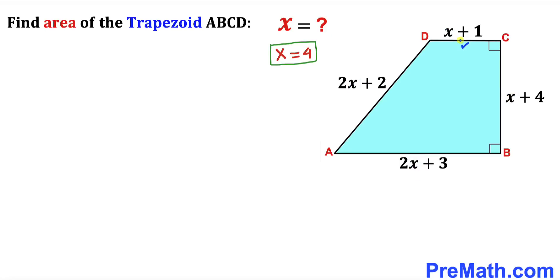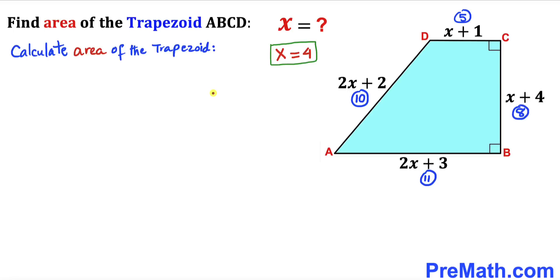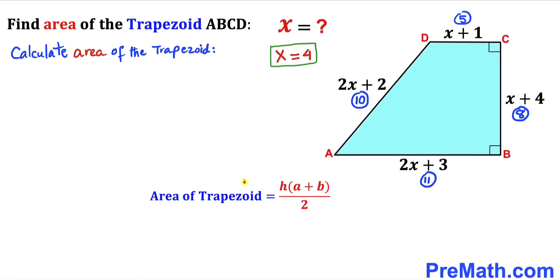Substituting x equals 4 into each side length: x plus 1 gives 4 plus 1 equals 5; 2x plus 2 gives 8 plus 2 equals 10; 2x plus 3 gives 8 plus 3 equals 11; and x plus 4 gives 4 plus 4 equals 8 units. Now we calculate the area of trapezoid ABCD using the formula: Area equals h times (a plus b) divided by 2.